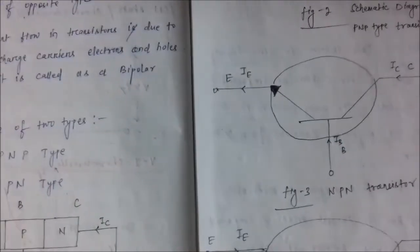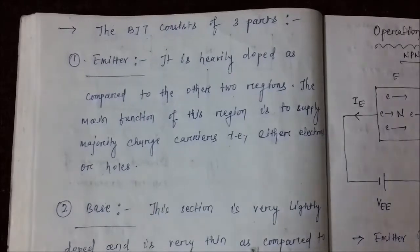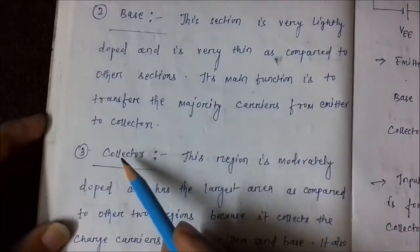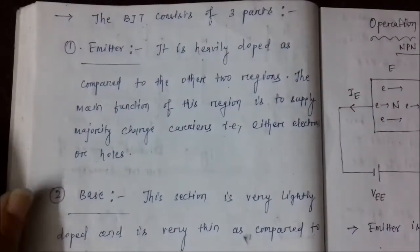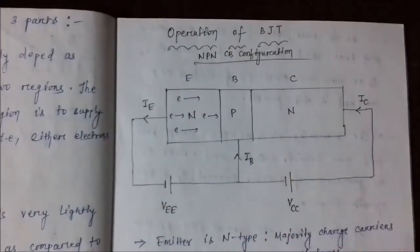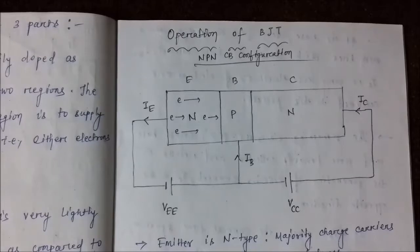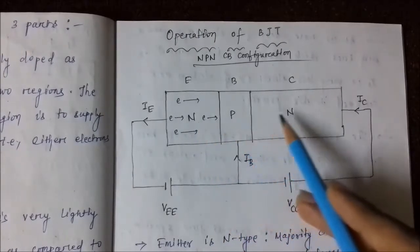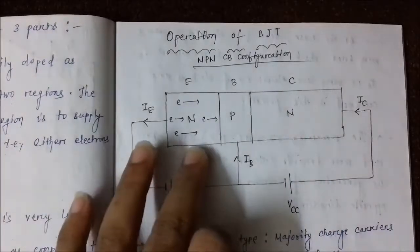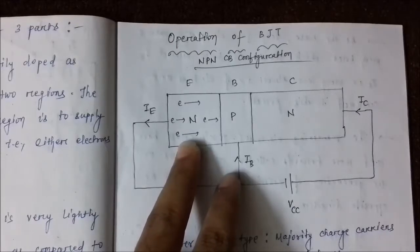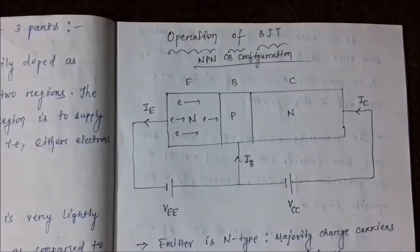The BJT consists of three terminals: emitter, base, and collector. The emitter region is heavily doped with impurities, as it has to act as a source of the majority charge carriers. In case of NPN the majority charge carriers are electrons, whereas in PNP the majority charge carriers are holes.